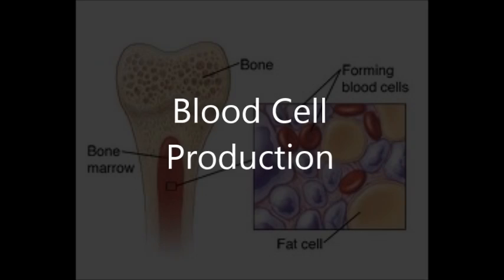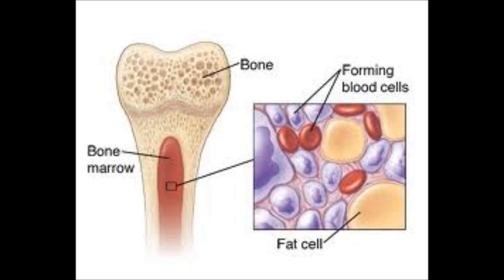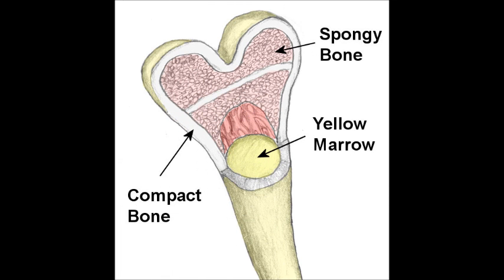Then we have mineral storage — bone is a reservoir for minerals, most importantly calcium and phosphate. The stored minerals are released into the bloodstream as needed for distribution to all parts of the body. Another important function is blood cell production, or hematopoiesis, which occurs in the marrow cavities of certain bones and produces red blood cells, white blood cells, and platelets.